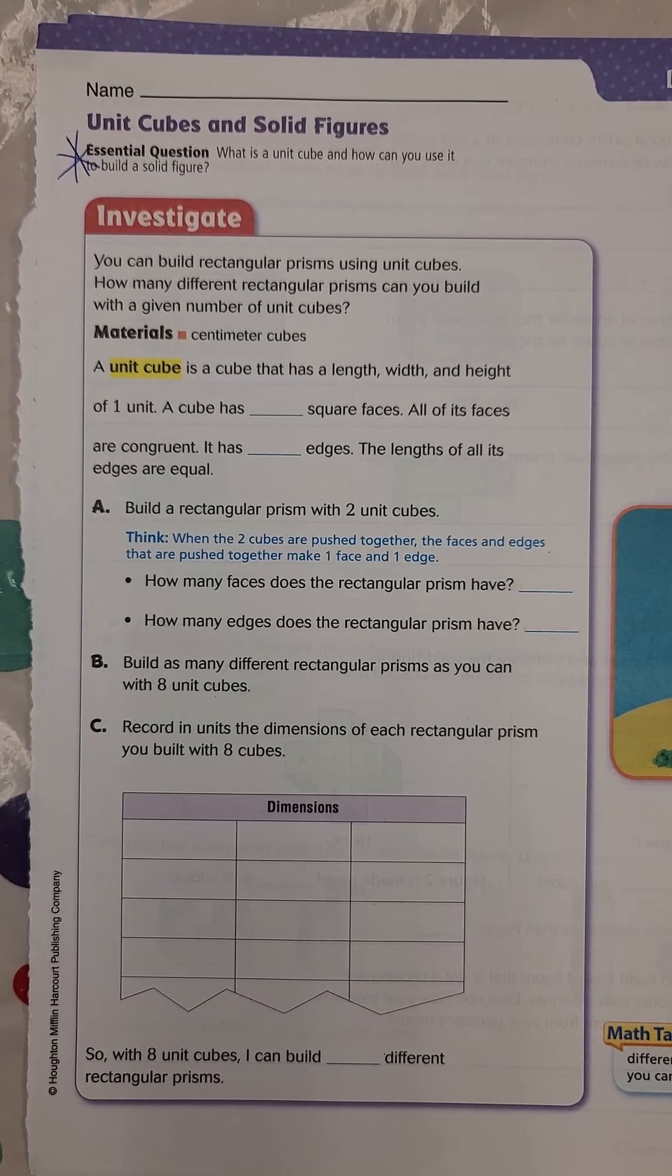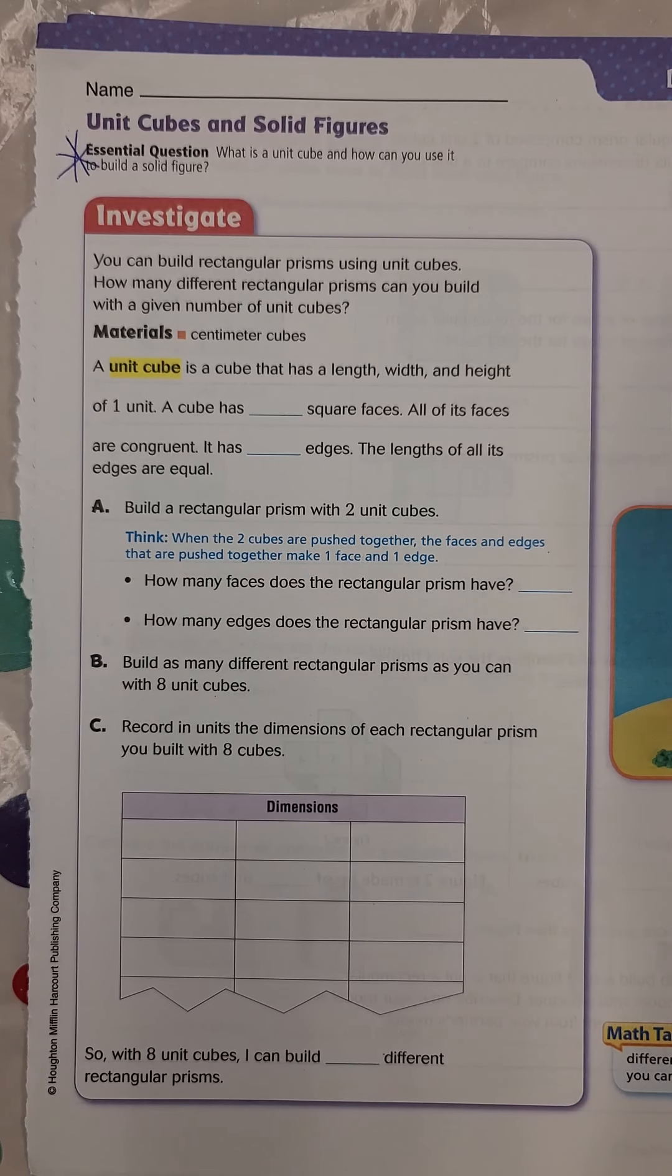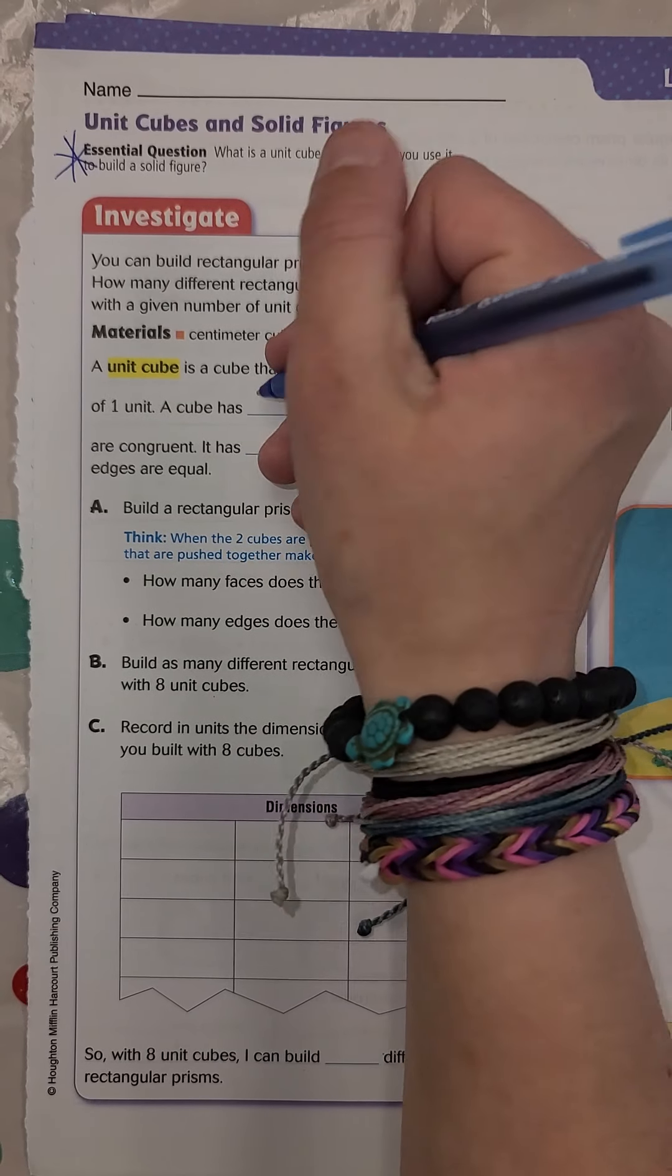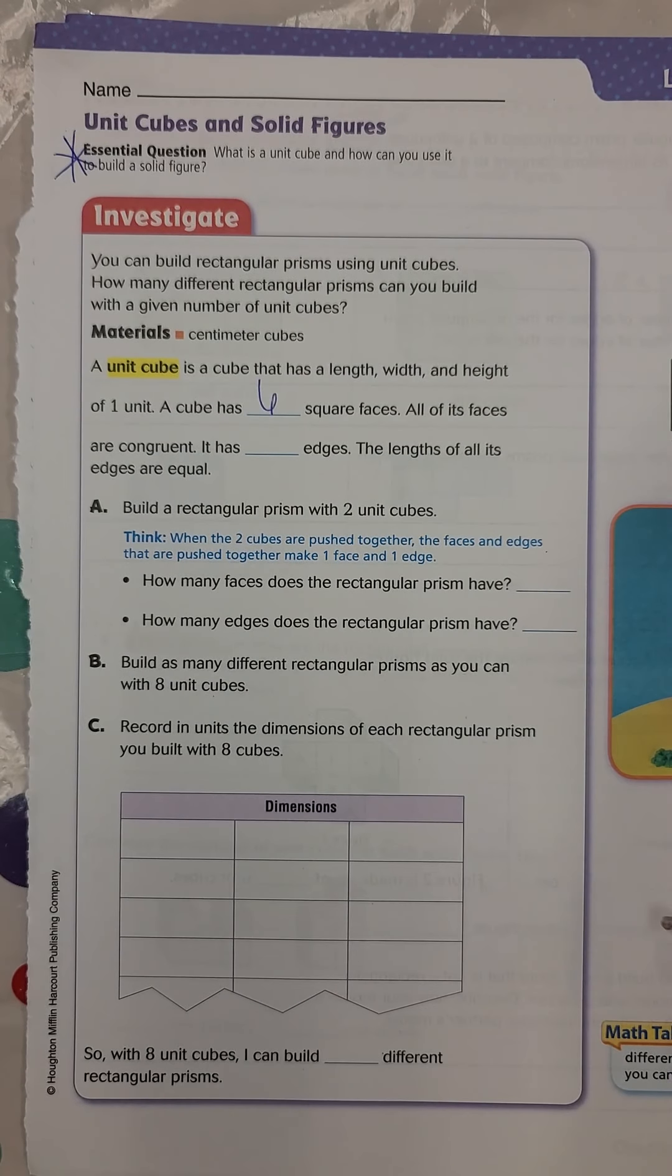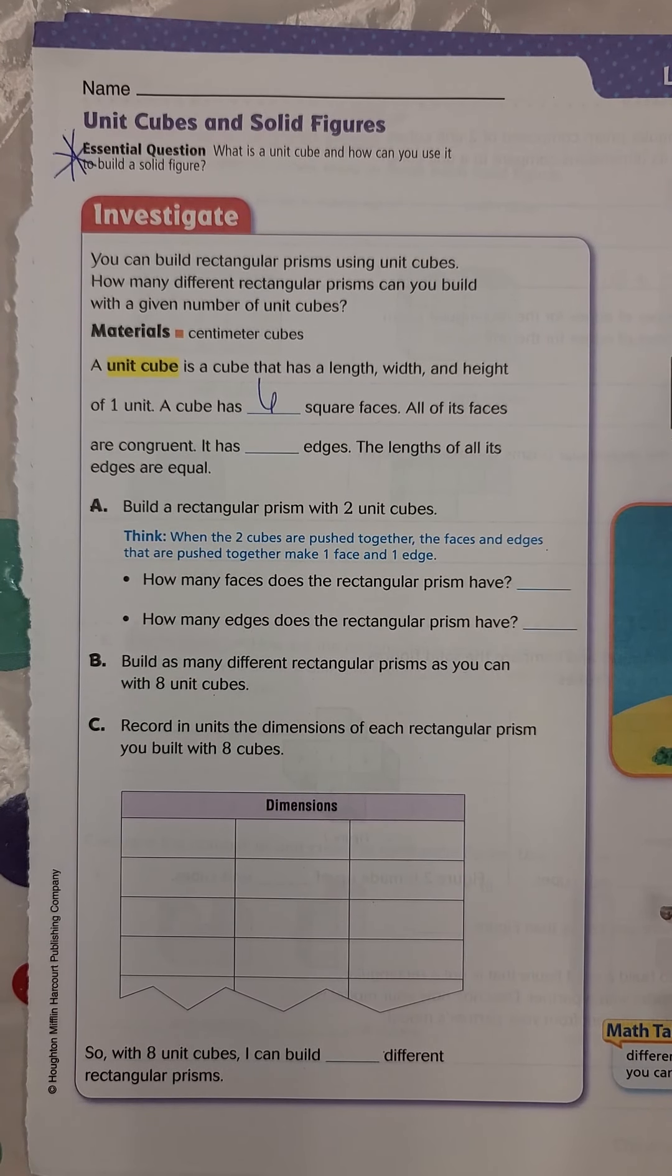This area right here is going to be the face and then this area or this little spot right here, that is the edge. So you have a face and you have an edge. A cube has how many square faces? So it would have one, two, three, four, five, six. It has six square faces. All of its faces are congruent. That means all of them are the same.